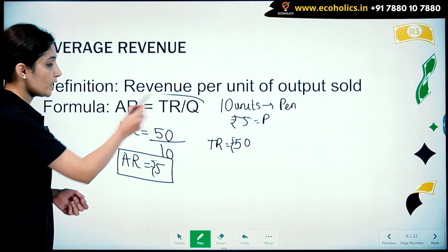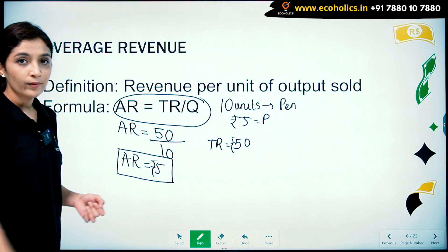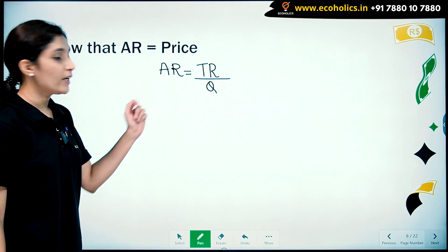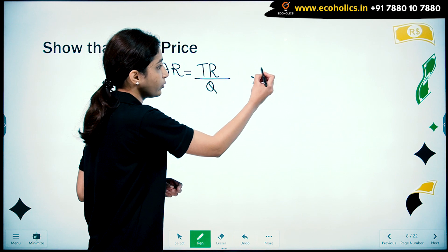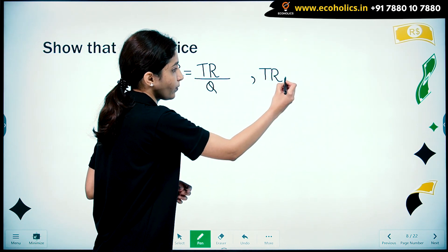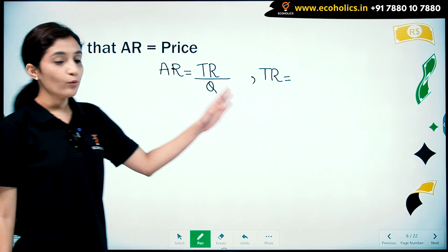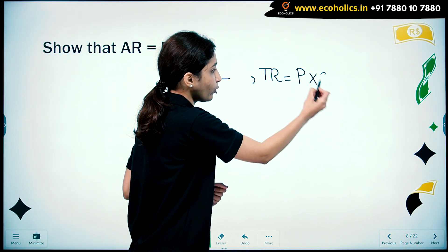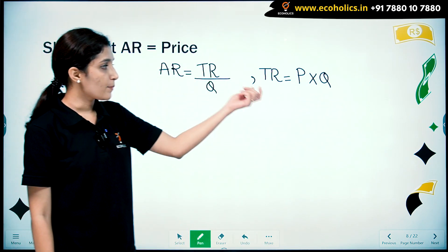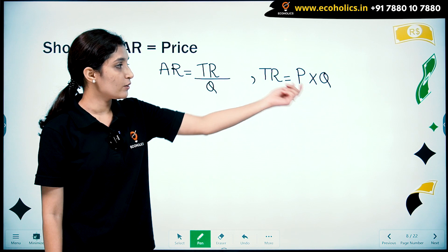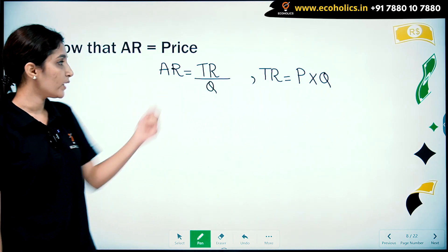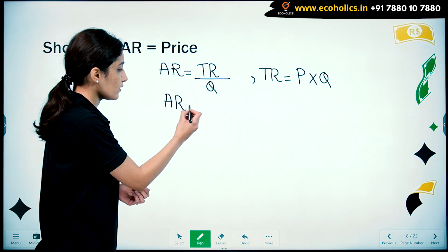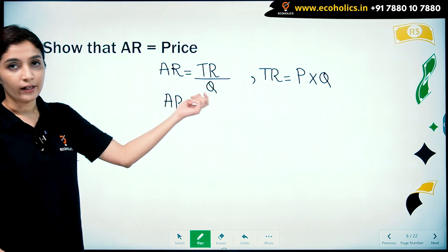Average revenue is equal to TR by Q. Now total revenue was equal to price multiplied by quantity. Substituting total revenue equal to price into quantity, we get: average revenue is equal to P into Q divided by Q.